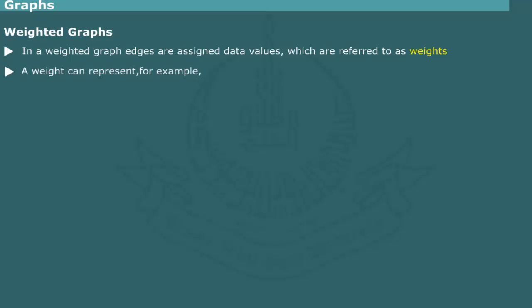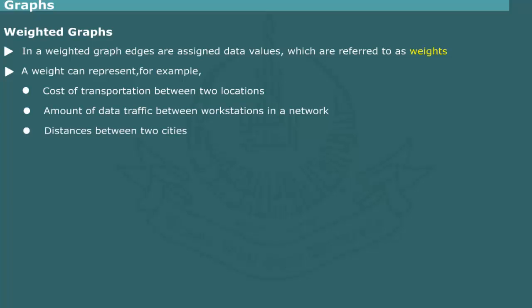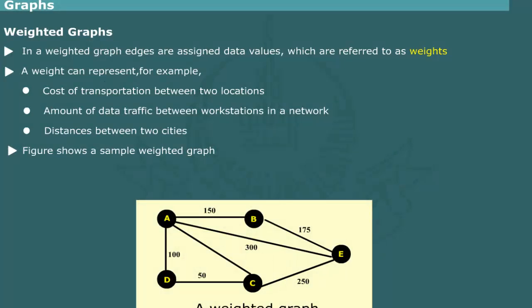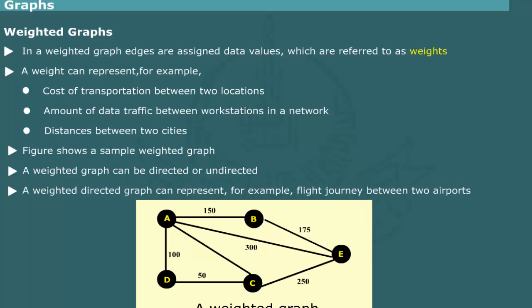Weighted Graphs: In a weighted graph, the edges are assigned data values which are referred to as weights. A weight can represent, for example, cost of transportation between two locations, amount of data traffic between workstations in a network, or distances between two cities. Figure shows a sample weighted graph. A weighted graph can be directed or undirected depending on the nature of application. For example, a weighted directed graph can represent flight journeys between two airports because flight distances between two airports might be different depending on the flight paths for forward and backward journeys.